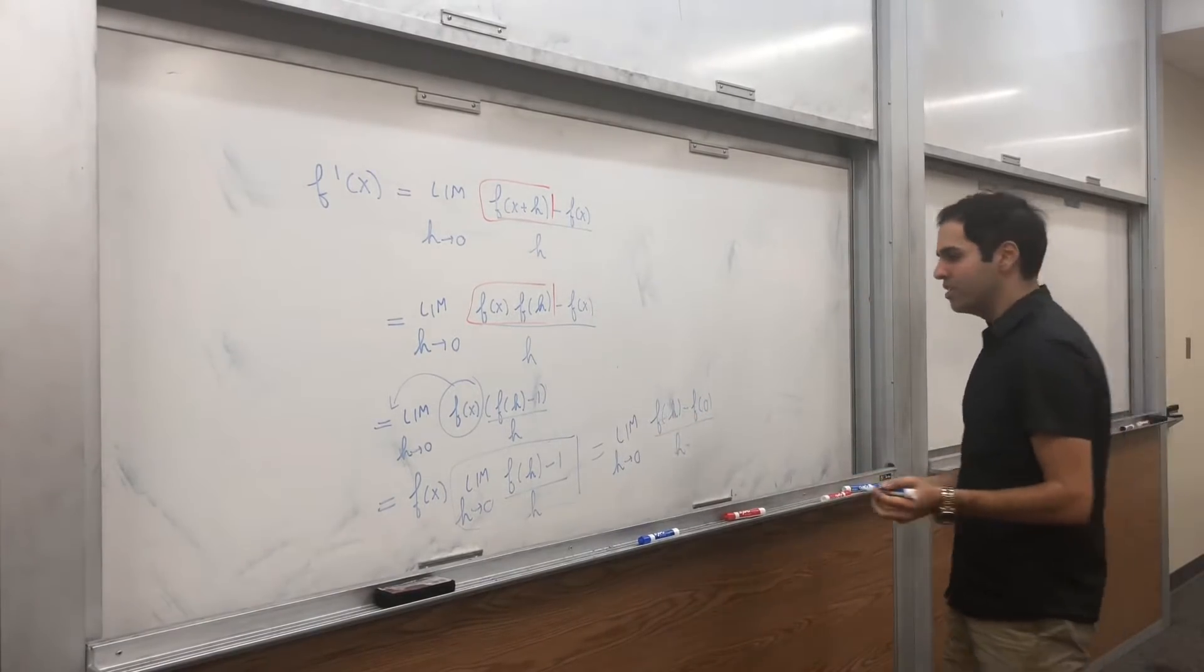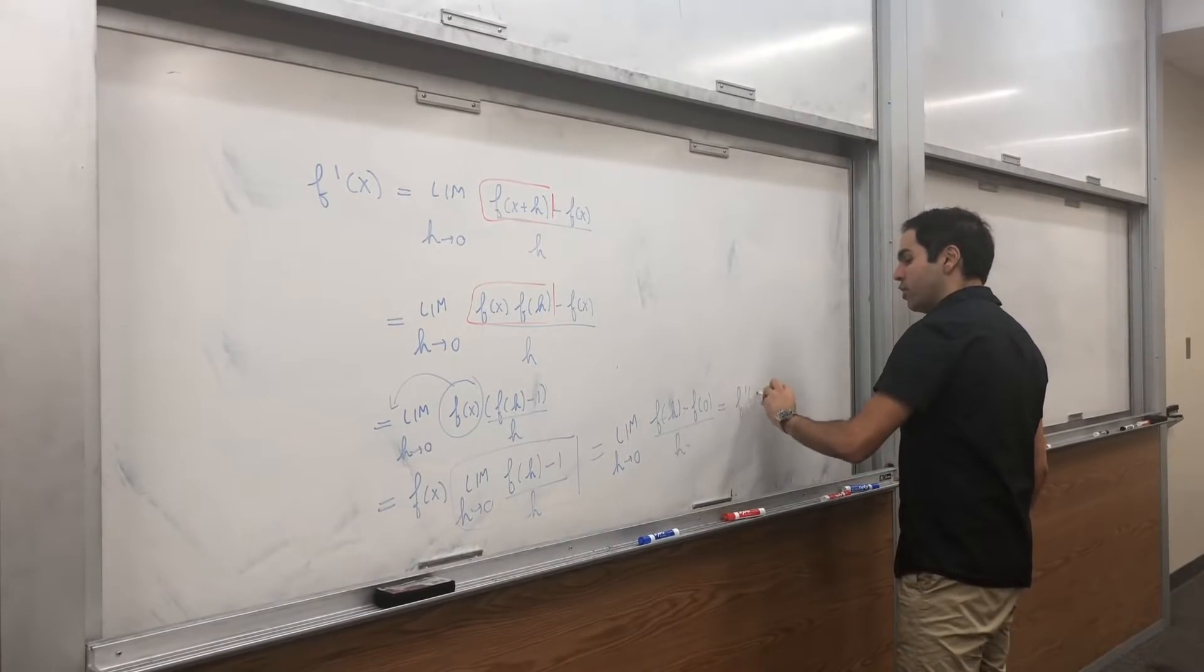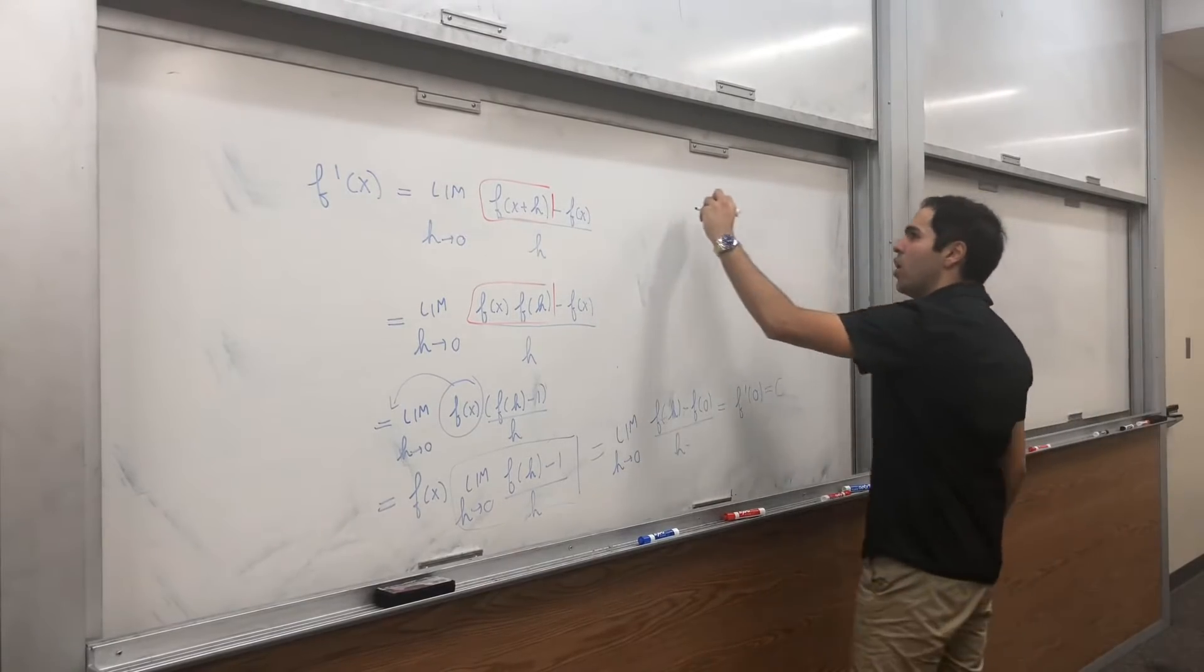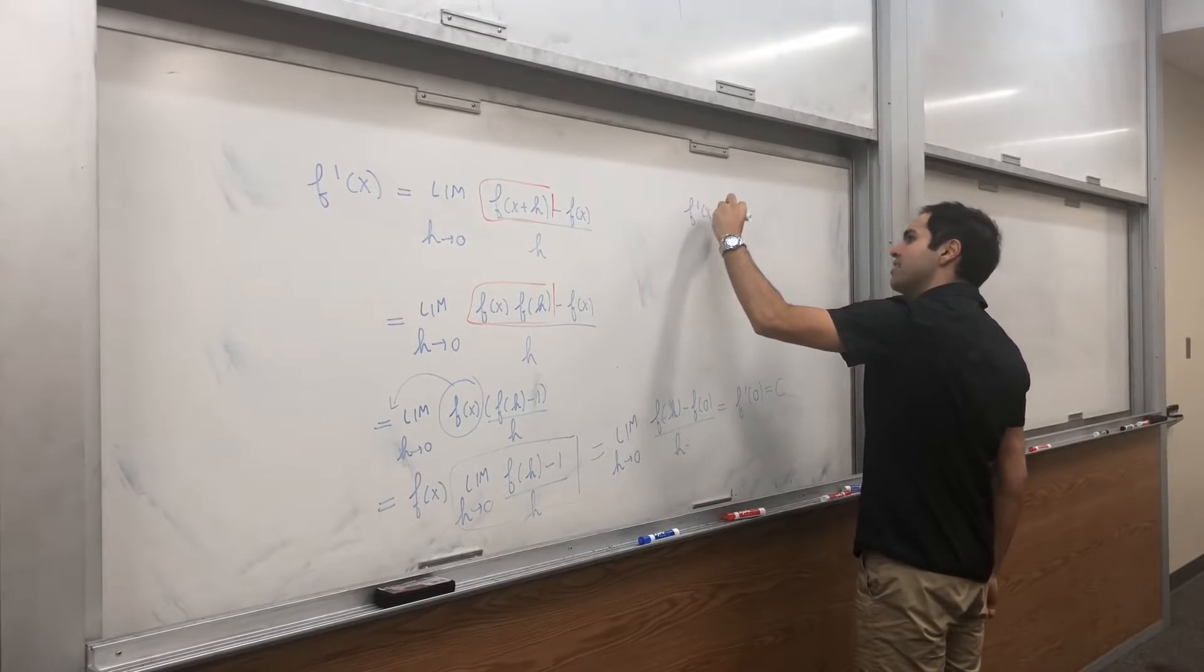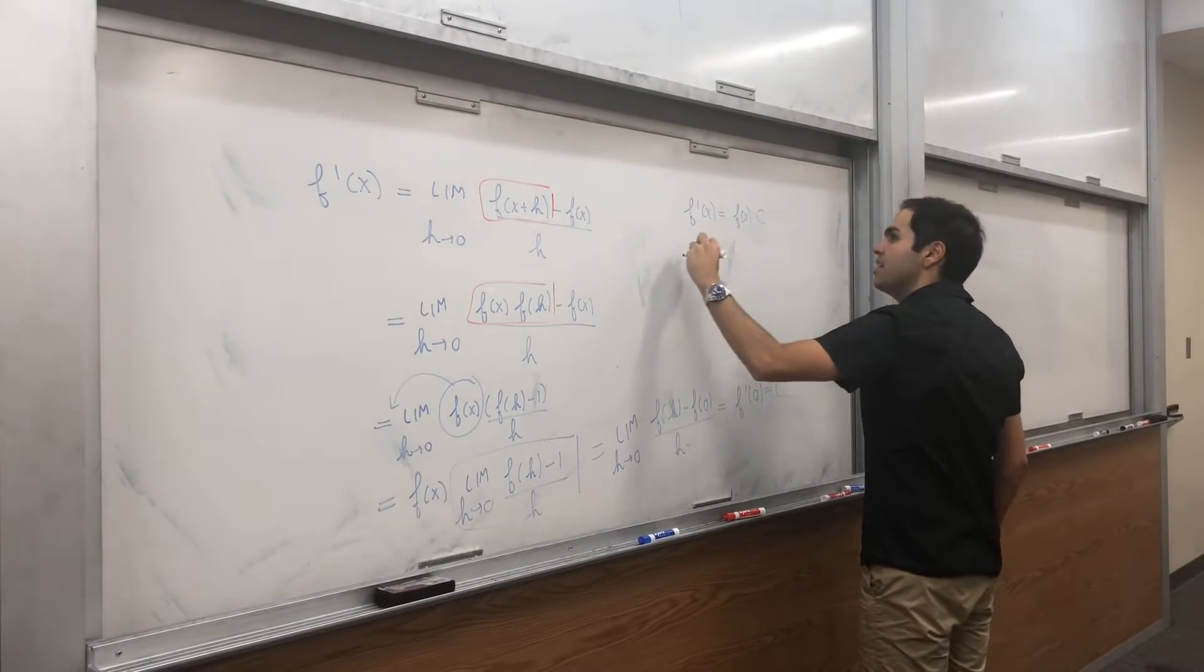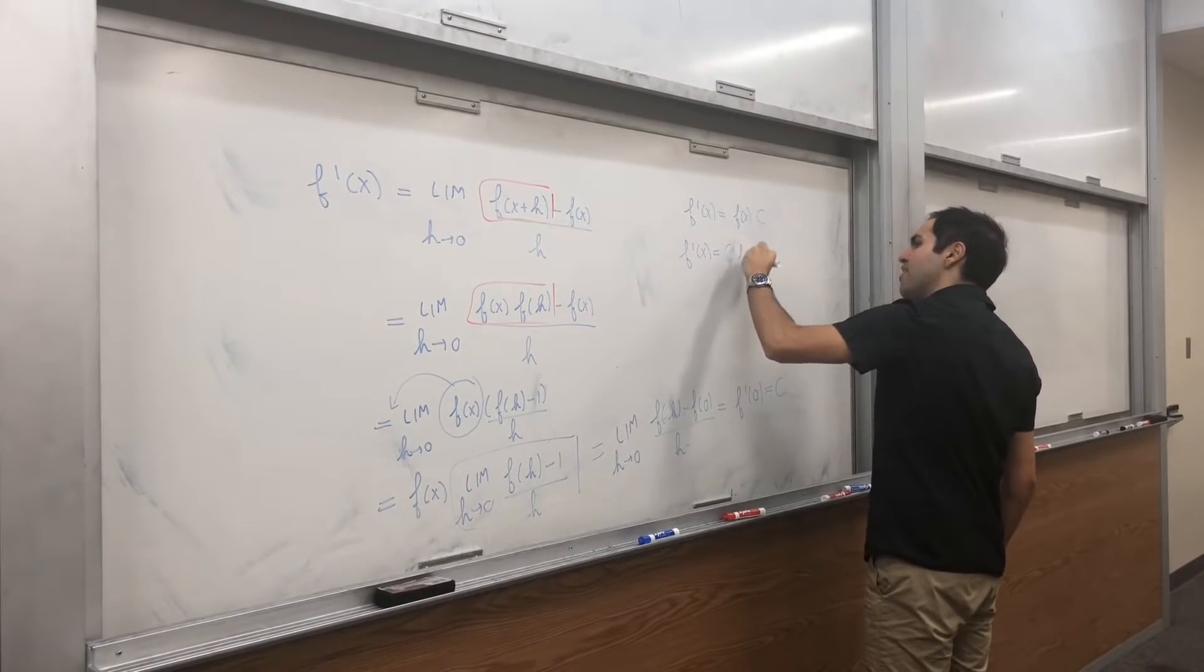Again, assuming f of 0 is 1, and that's just the derivative, that's just f prime of 0 if you think about it, which we call c. So f prime of x equals to f of x times c. So f prime of x equals to c f of x.